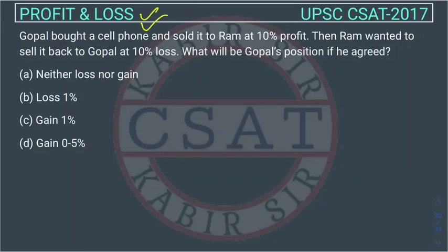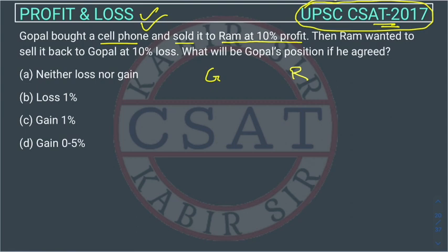This is a profit and loss question asked in UPSC Civil Services Examination 2017. The question is: Gopal bought a cell phone and sold it to Ram at 10% profit. Gopal bought a mobile — we don't know the price — and sold it to Ram with 10% profit. Then Ram wanted to sell it back to Gopal.